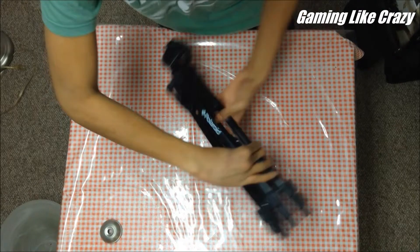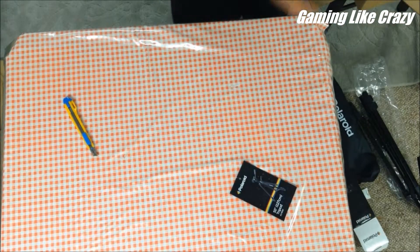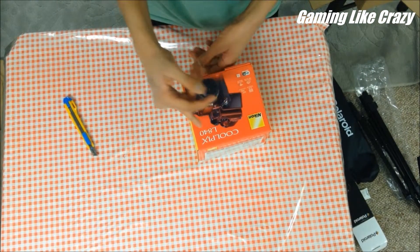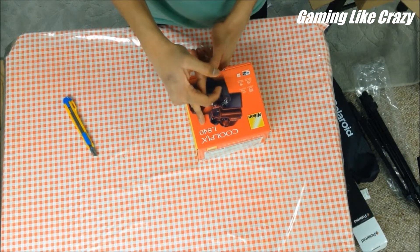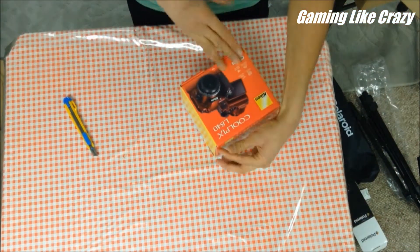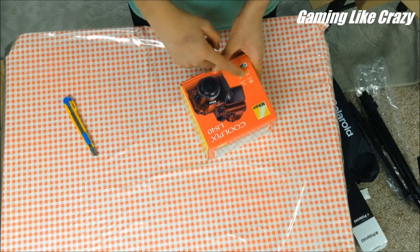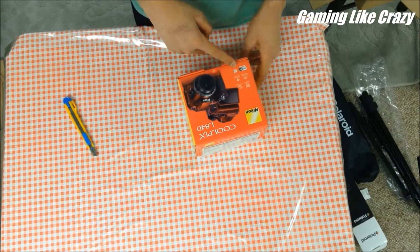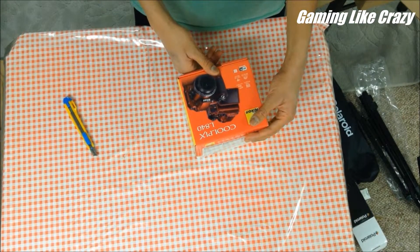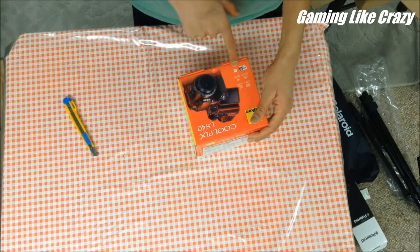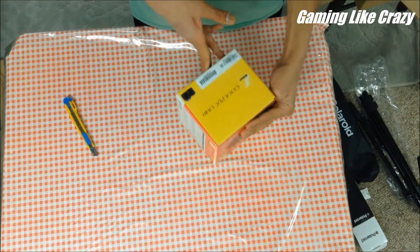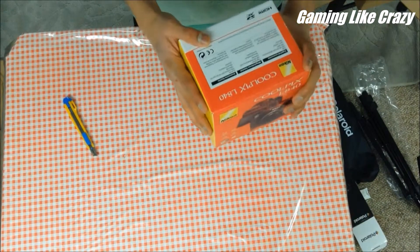This is a Nikon Coolpix L840. It's 16 megapixels, 38 times wide zoom lens, 7.5 centimeter tilt screen, full HD video, and Wi-Fi. It's red, so it looks nice.